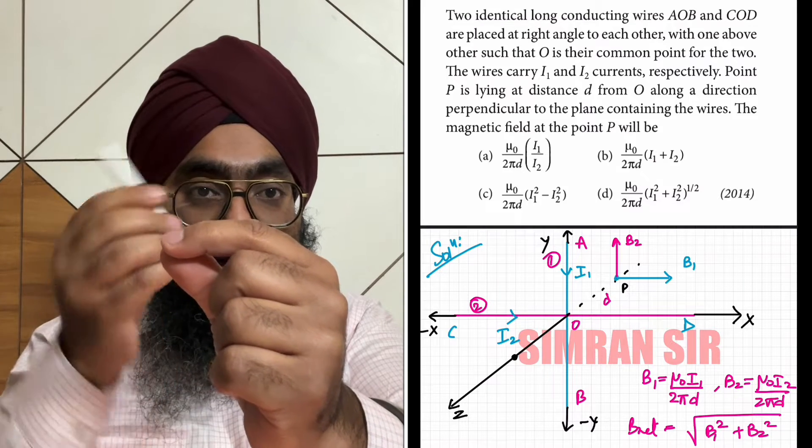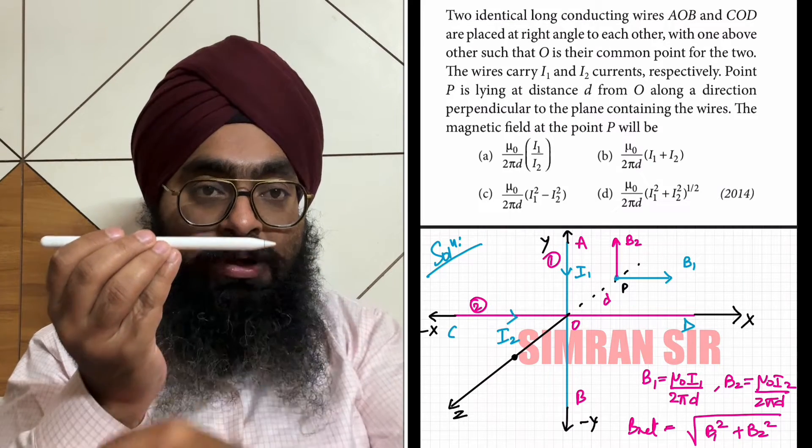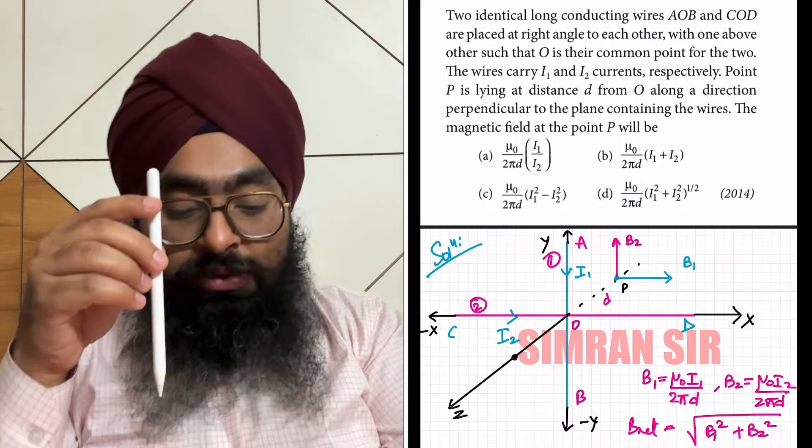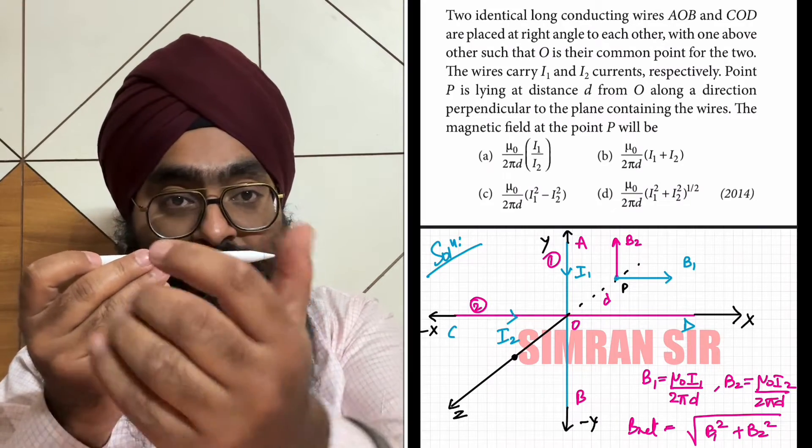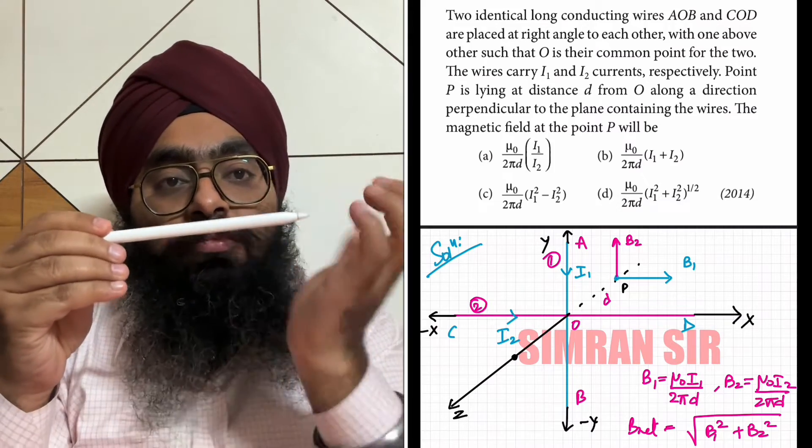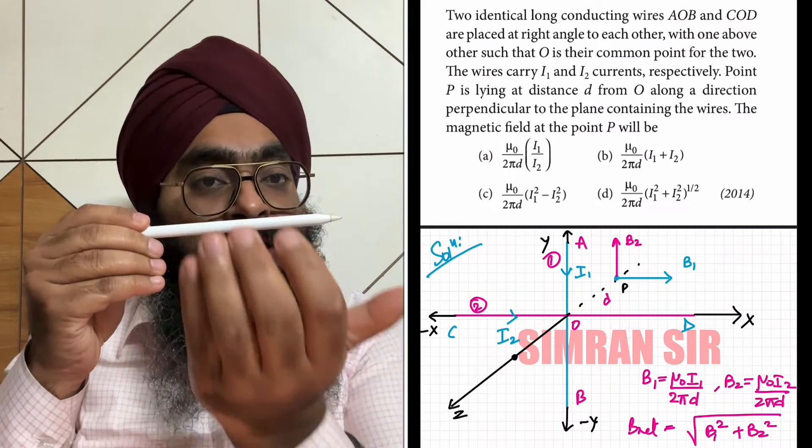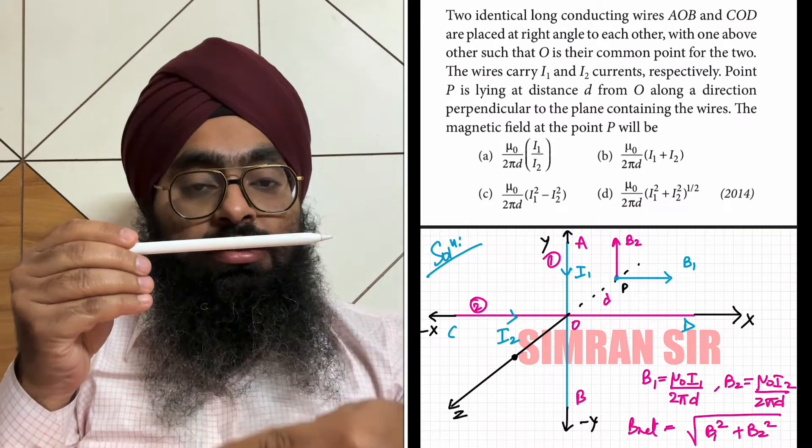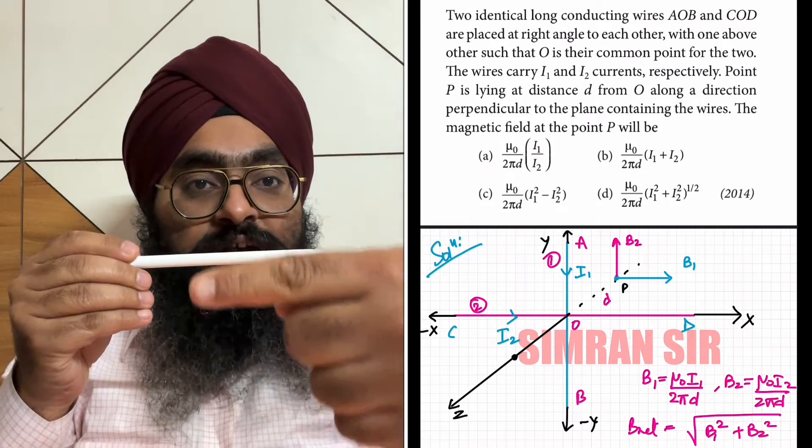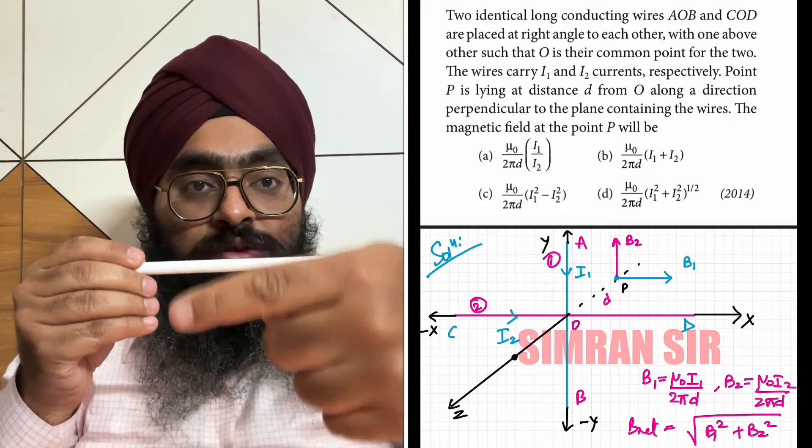I will hold my hand along this current direction, so fingers curl like this to form magnetic field lines. At point P, the magnetic field will go upward.